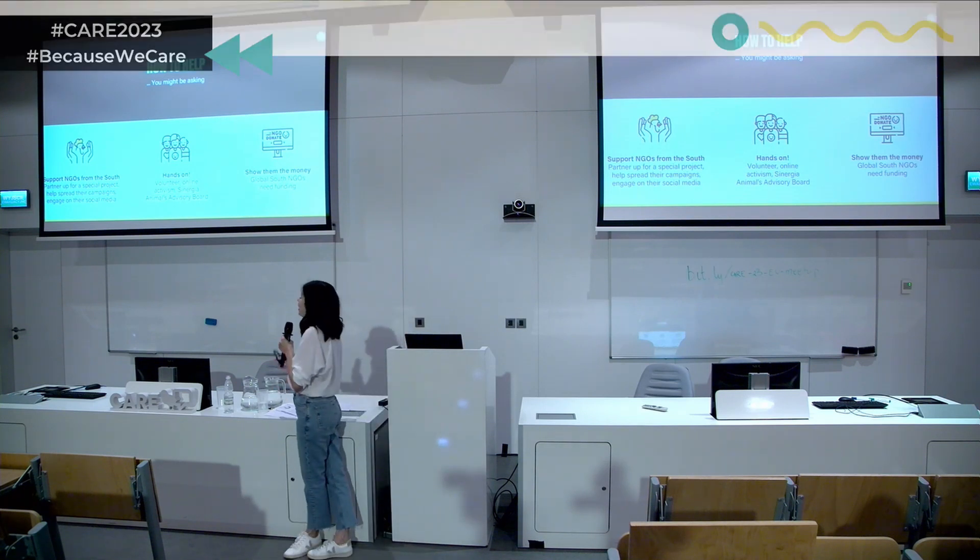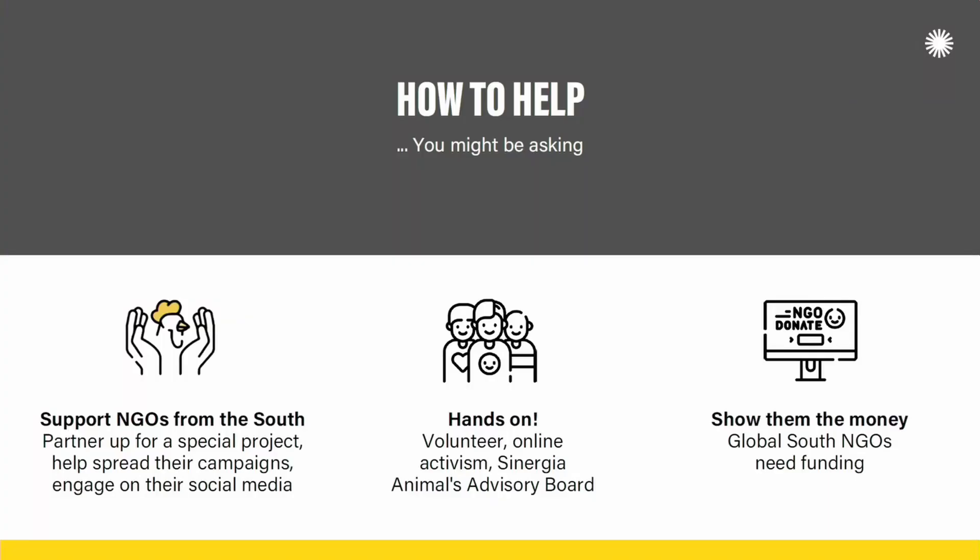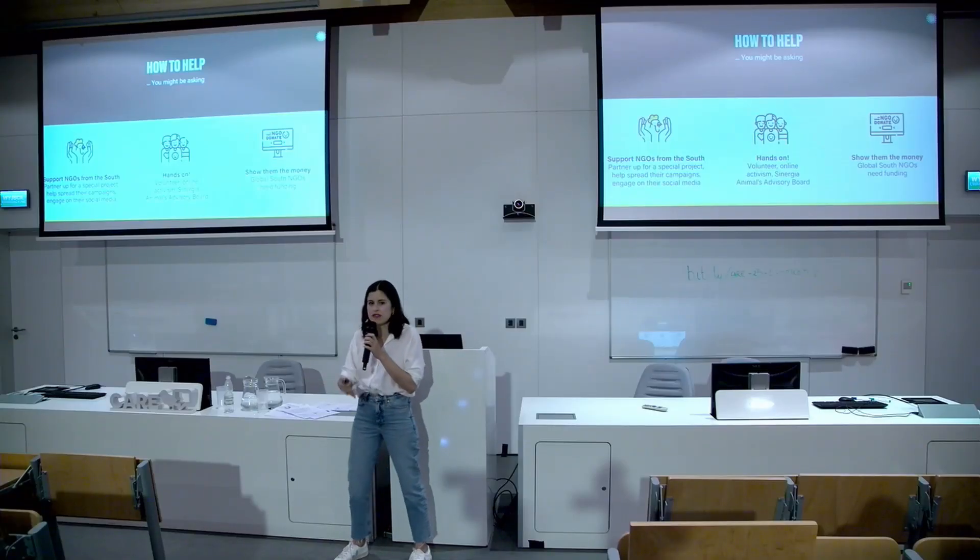More hands-on options: you can volunteer or do online activism. There is an opportunity through Synergy Animal's Advisory Board — we are currently recruiting members. And then we talked about the need to shift funding to where the animals are — fundraising for Global South organizations is also one important way of helping.